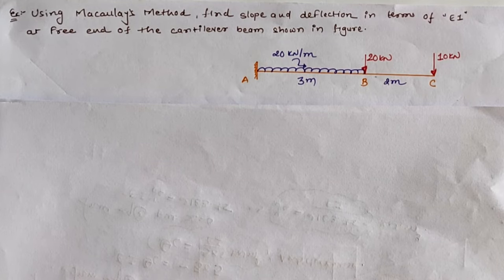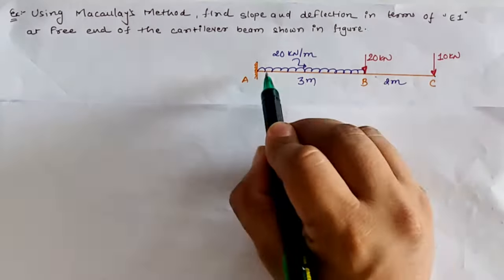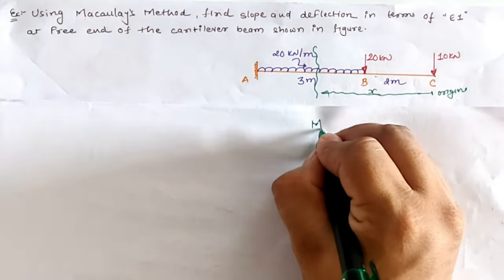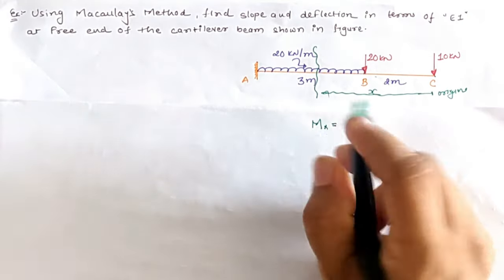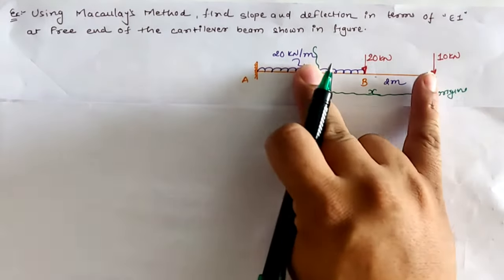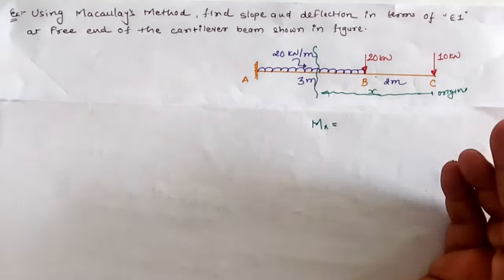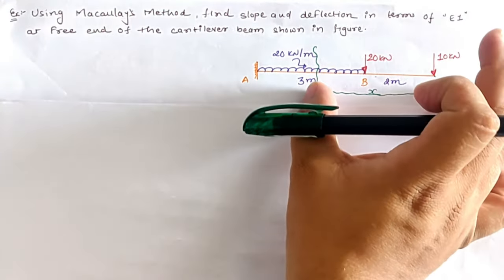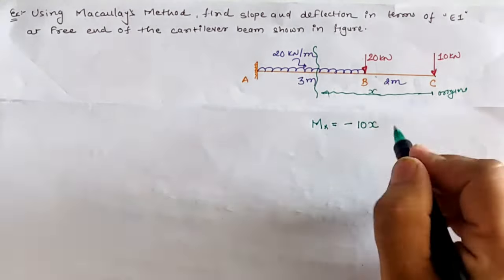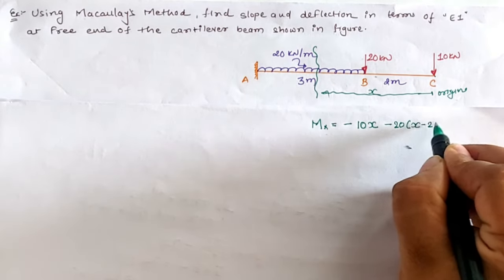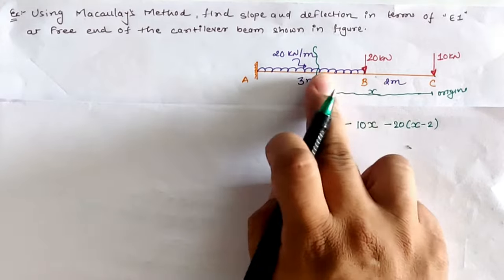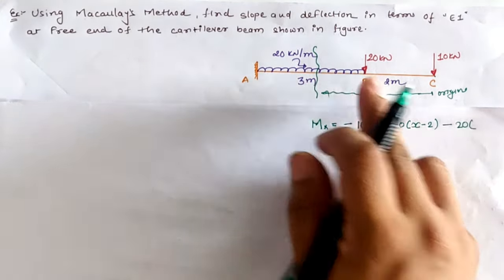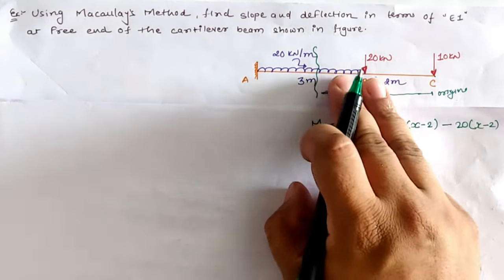For using Macaulay's method, we have to first take a section in the cantilever beam. From the right-hand side, if we take the section between A to B as the last span, then the moment at section Mx: at location x, the 10 kN load at distance x acts clockwise, and sectional right-hand side clockwise is negative, so value is minus 10 into x. For the 20 kN load, the distance is x minus 2, hence it creates clockwise moment: minus 20 into (x minus 2). For the raised UDL cut by the section, it also creates clockwise moment: minus 20 times (x minus 2) with CG value (x minus 2)/2, giving minus 20 times (x minus 2) squared divided by 2.